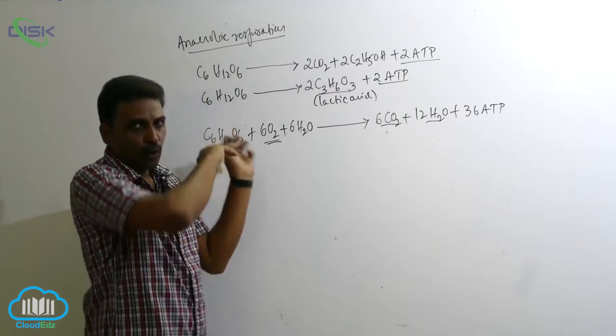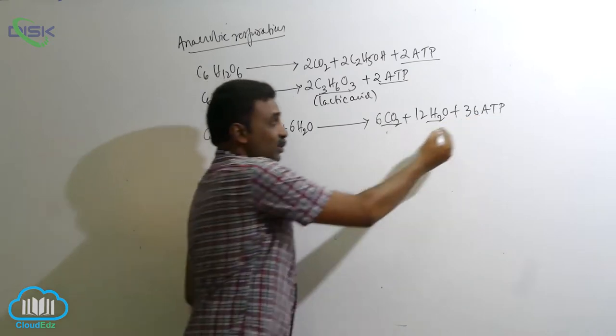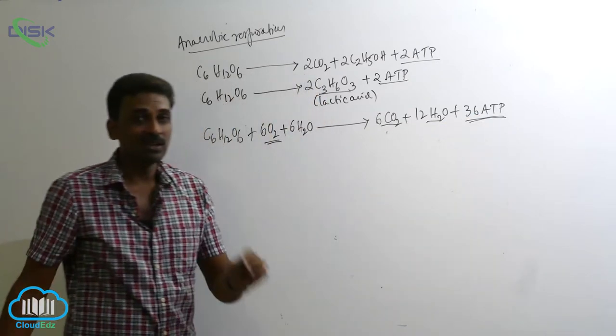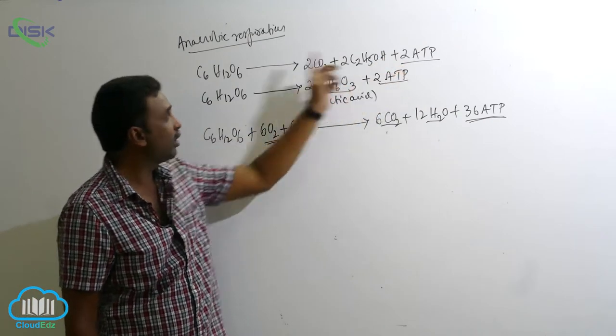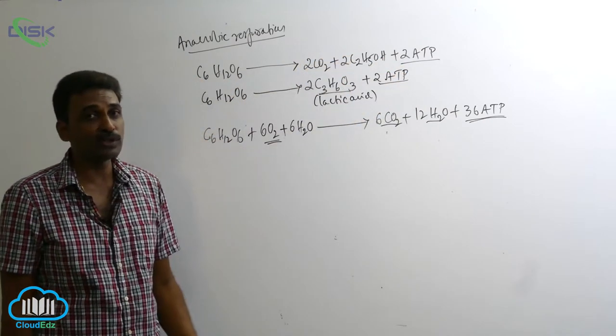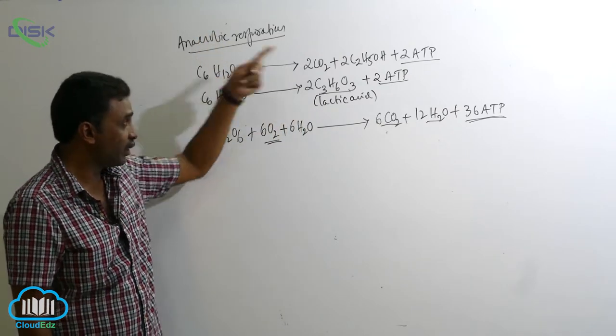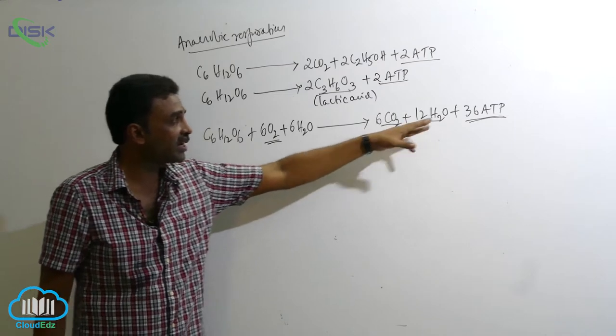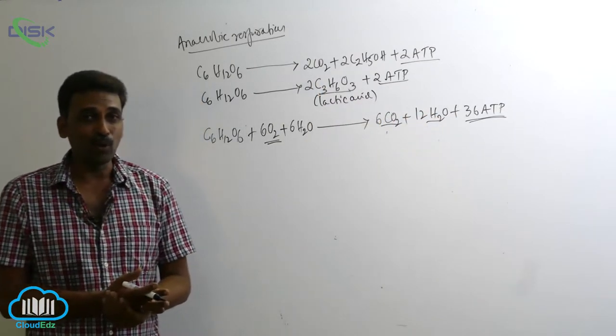So the total energy present inside the glucose molecule is released. Here more energy is released, around 36 ATP molecules. When compared to the 2 ATP molecules coming from one glucose in anaerobic respiration, in case of aerobic respiration, you can see several times more energy.